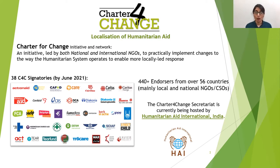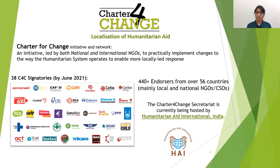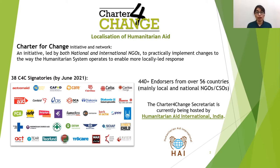On the other hand, we have 440 plus endorser members who are local and national NGOs who have joined to support their INGO partners in making change and holding them accountable to the commitments we signed. The Charter for Change was introduced in 2015 and officially launched in 2016 by a handful of organizations. Now we've grown to have this very diverse membership of endorsers and signatories from over 56 countries.